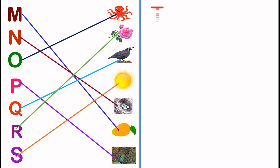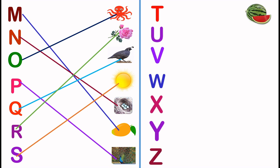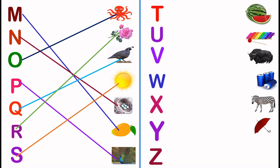T, U, V, W, X, Y, Z. Watermelon, xylophone, yolk, tin, zebra, umbrella, vase.